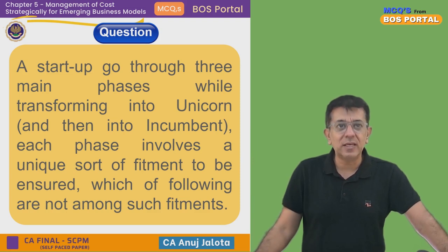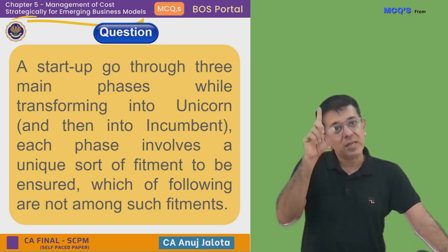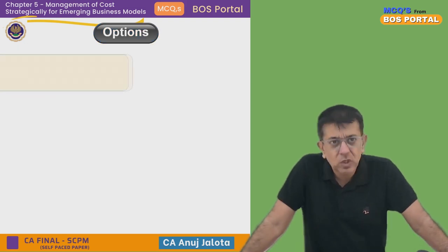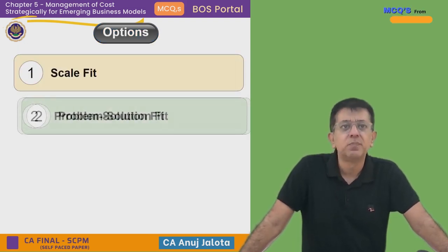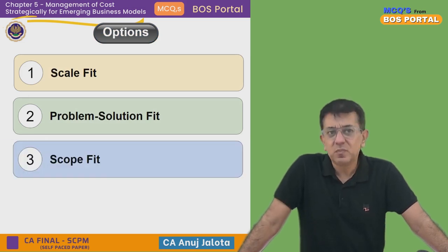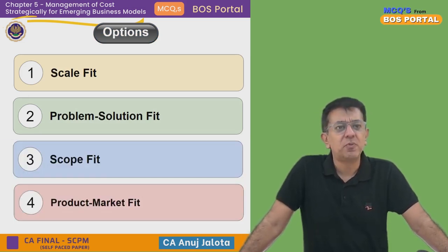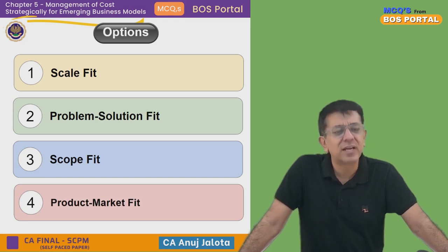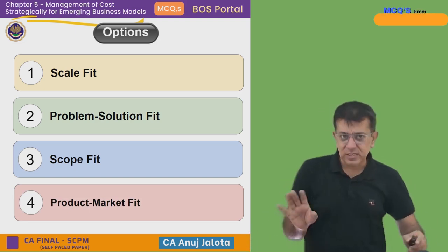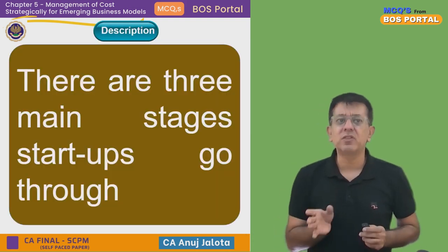The question says: which of the following is NOT one of the three phases? The options are: Scale Fit, Problem Solution Fit, Scope Fit, and Product Market Fit. Let me explain each phase — that will be far better.